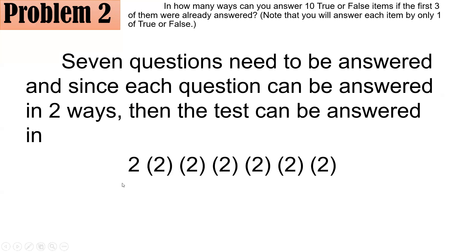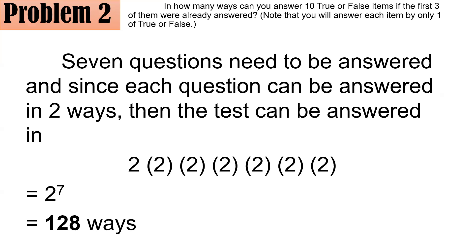There are seven slots for questions four through ten. We did not include slots for questions one, two, and three because they are already answered. Since each question can be answered in two ways, and by the fundamental counting principle we multiply all of them, we have seven twos as factors — equal to 2 raised to 7, which is 128. So there are 128 ways to answer the remaining seven items.